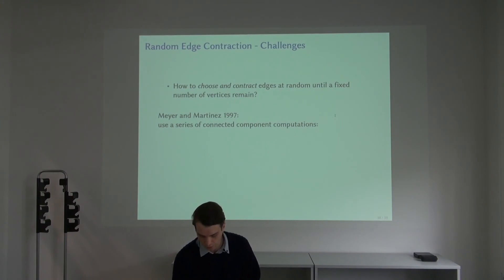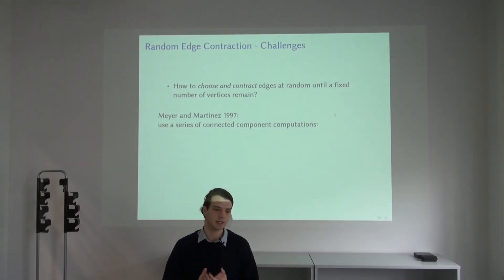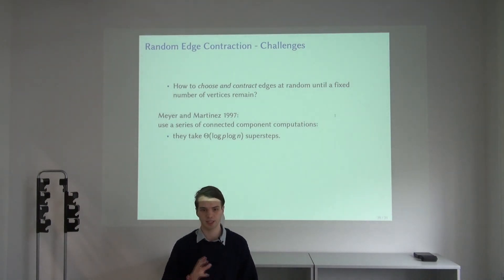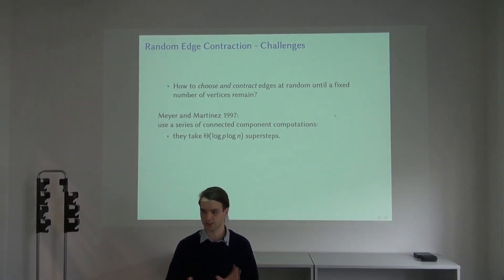Finally, we also need to provide implementations for these steps. How do we really choose these edges with probability proportional to their weight? How do we contract these edges? This turns out to be a non-trivial issue to achieve within the bounds that we did. The previous work takes log p log n super steps, and they do some binary search using connected components. This leads to a large number of super steps and is the reason why they have a larger communication volume. There is some ingenuity going into how we can do this in a constant number of super steps.